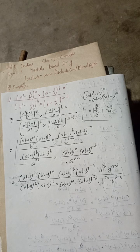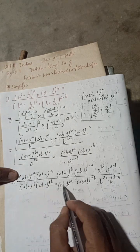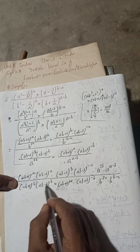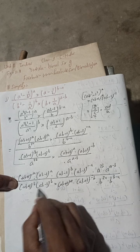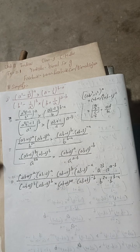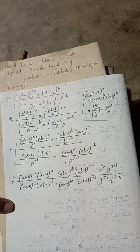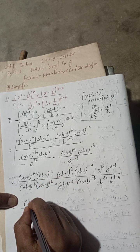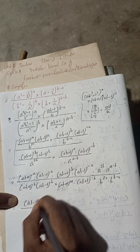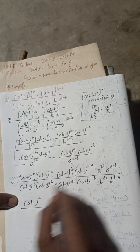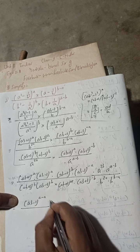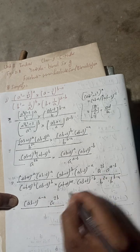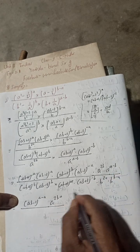Now you can see the same terms: (ab+1) to the power b and (ab−1) to the power b are the same here. And (ab−1) to the power b is the same. Other things: (ab−1) to the power a and (ab−1) — both are same, so same. Adding powers: a and −a gives 0, so power becomes 0. Anything to the power 0 is 1.